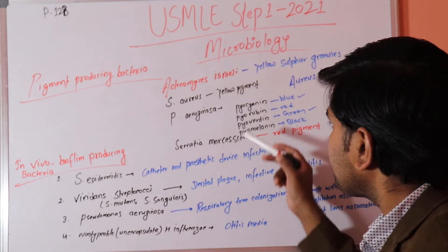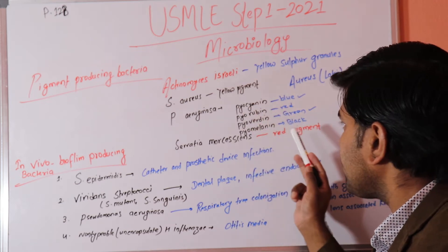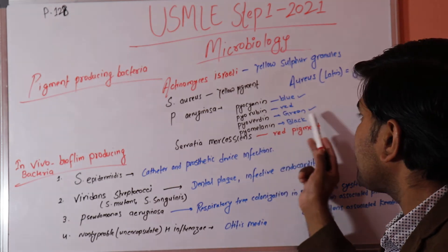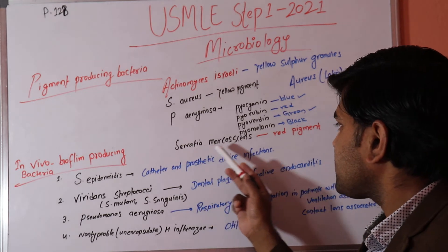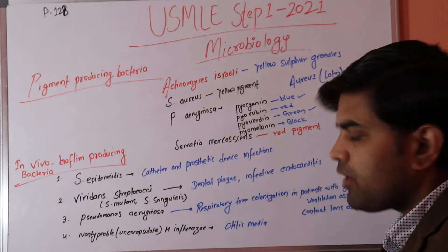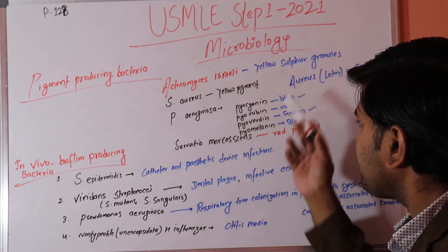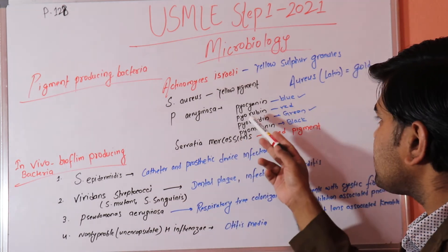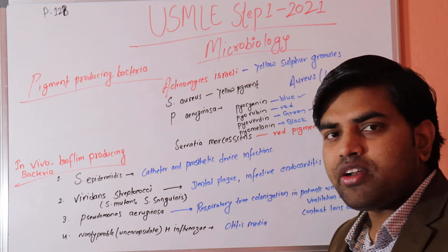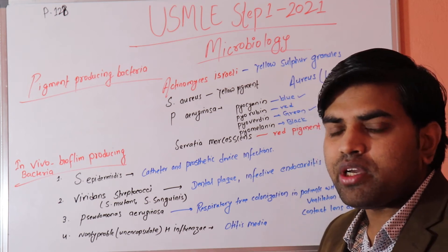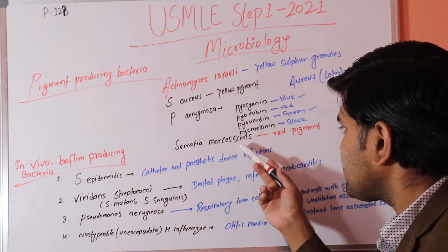Pseudomonas aeruginosa produces: pyocyanin (blue), pyorubin (red), pyoverdine (green), and pyomelanin (black). Serratia marcescens produces a red pigment. These pigments help clinically identify wound infections — a blue or green wound suggests Pseudomonas, while a red color suggests Serratia marcescens infection.